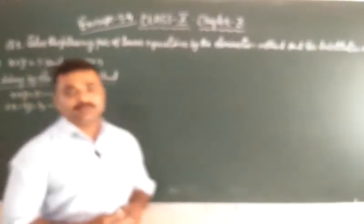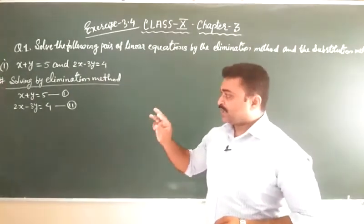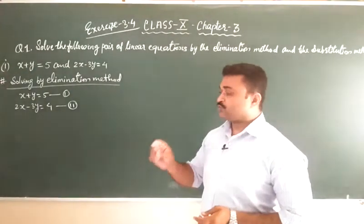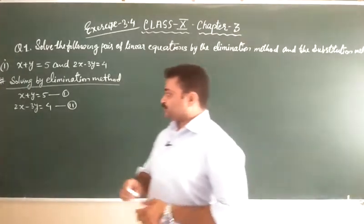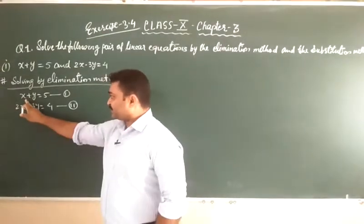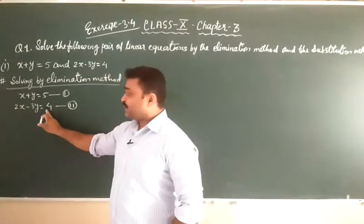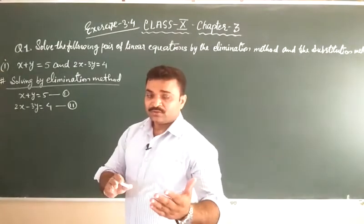Solving by elimination method: first of all we will write the equations as x plus y is equal to 5 — this is equation number 1 — and 2x minus 3y is equal to 4 — this is equation number 2. In this method, students, we will eliminate any one of the two variables, meaning दो variables में से हमको किसी एक variable को eliminate करना है और दूसरे variable की value find करनी है. So you can see here x plus y is equal to 5 and 2x minus 3y is equal to 4.